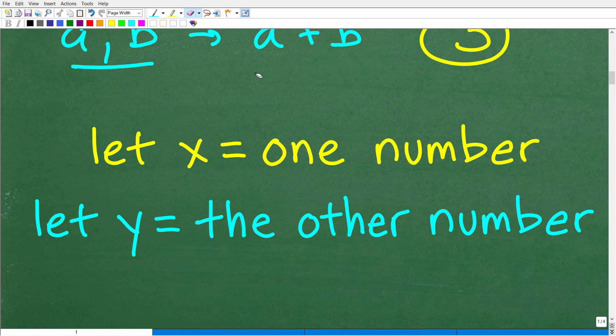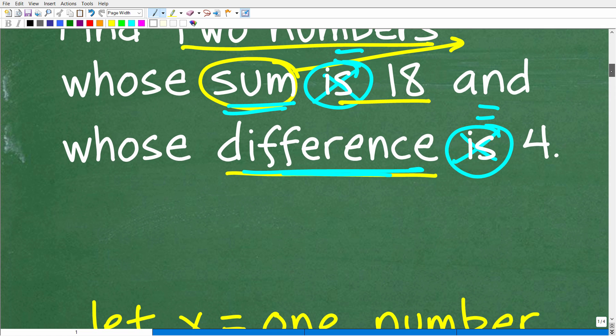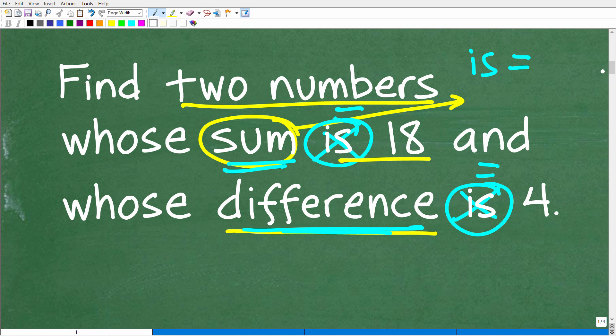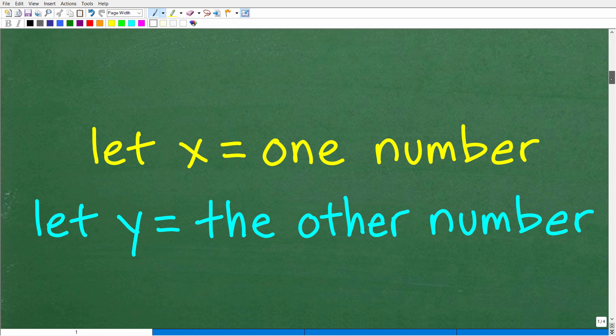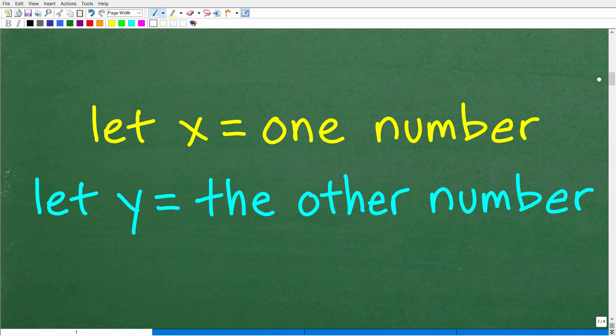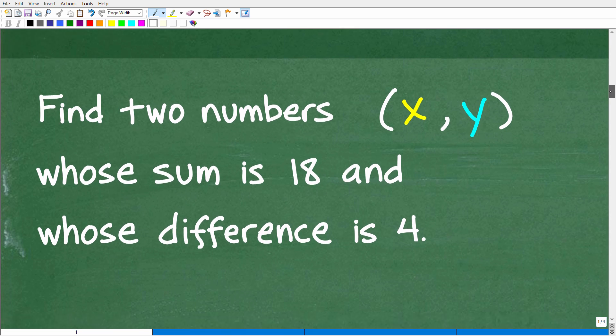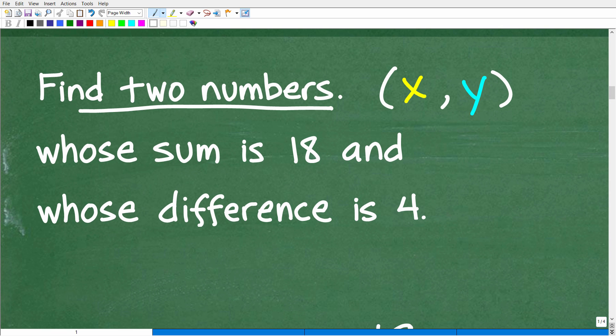Okay. So instead of a and b, what I'm going to do is use two variables here. I'm going to let x equal one number because we're looking for two numbers. So I'll let x equal one number and y equal the other number because there's no kind of relationship between these numbers here. We don't have like one number is three times larger than the next number, or one number is five more than the other number. We just have two numbers and we know that the result of adding and subtracting them. So we have these two numbers, x and y, whose sum is 18.